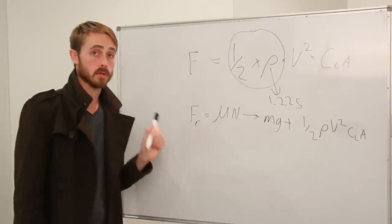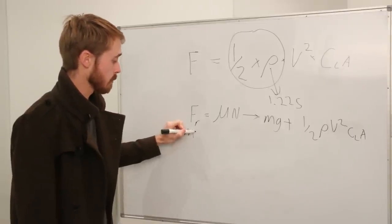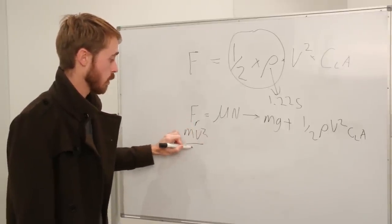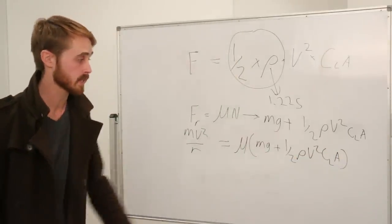But our frictional force into the corner is also equivalent to our centripetal force which is M V squared on R. Now I know most of you aren't that into math so I'll just skip the derivation of this and just show you the output.